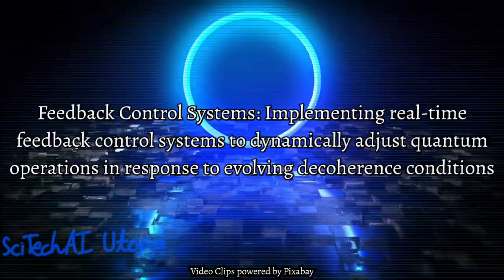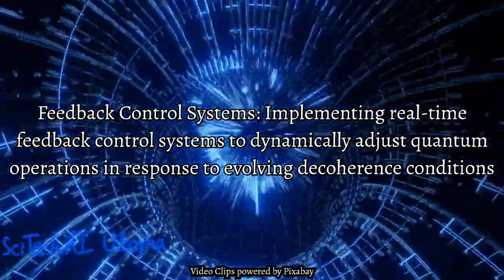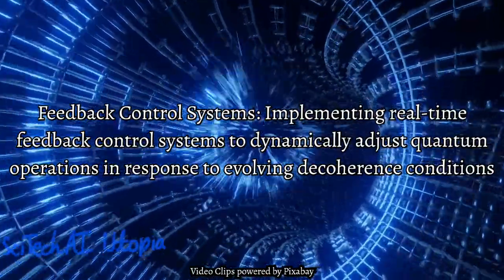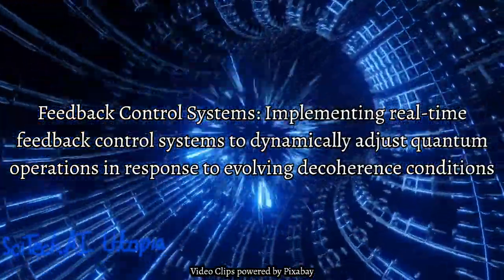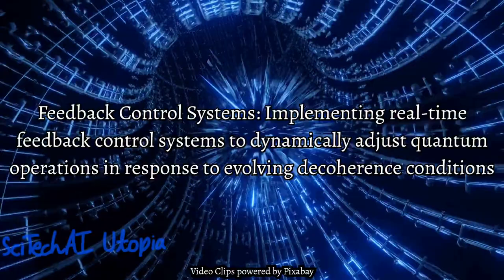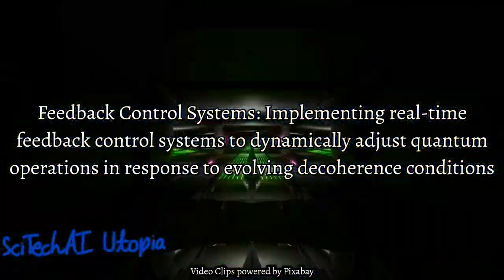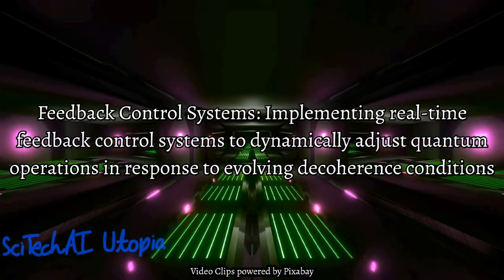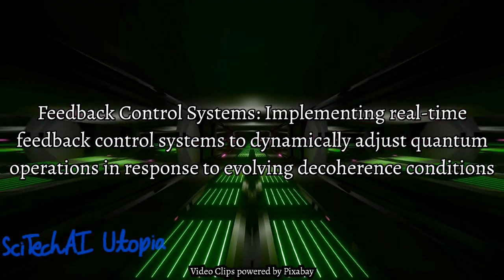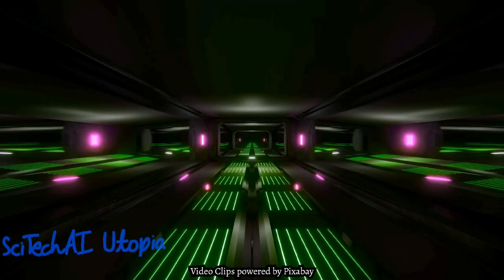Solution 40: Feedback Control Systems. Feedback control systems in quantum computing involve dynamically adjusting quantum operations based on real-time monitoring of system conditions. By continuously adapting to the evolving state of the quantum system, feedback control systems aim to mitigate the effects of decoherence, maintaining the stability and accuracy of quantum computations.